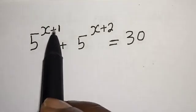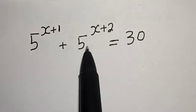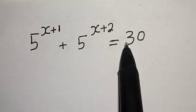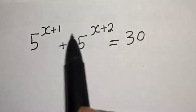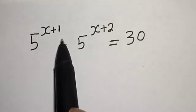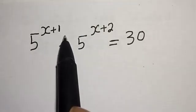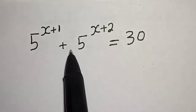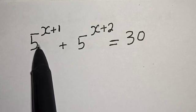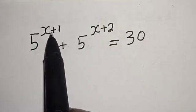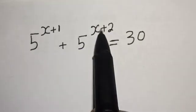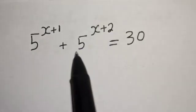5 raised to power x plus 1, plus 5 raised to power x plus 2, is equal to 30. Hi everyone, welcome to my class. In this class we want to find the value of x from this equation: 5 raised to power x plus 1, plus 5 raised to power x plus 2, is equal to 30.